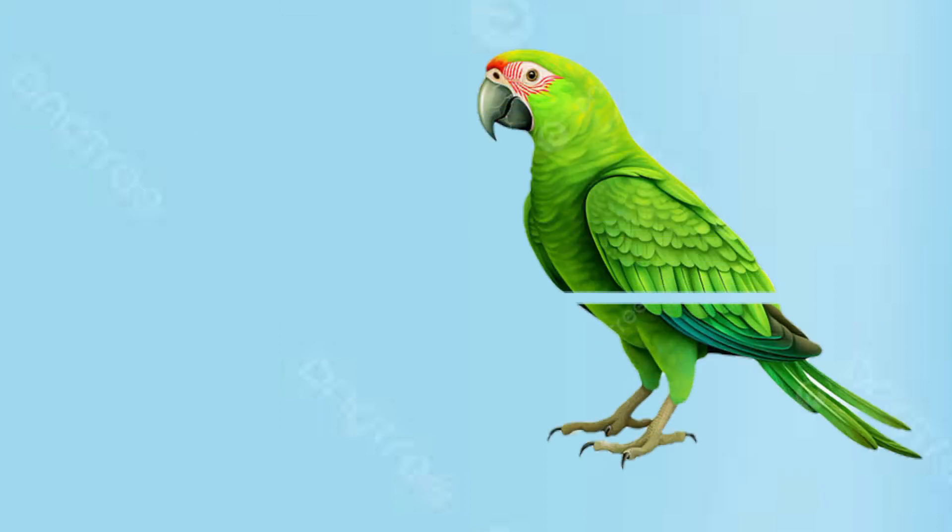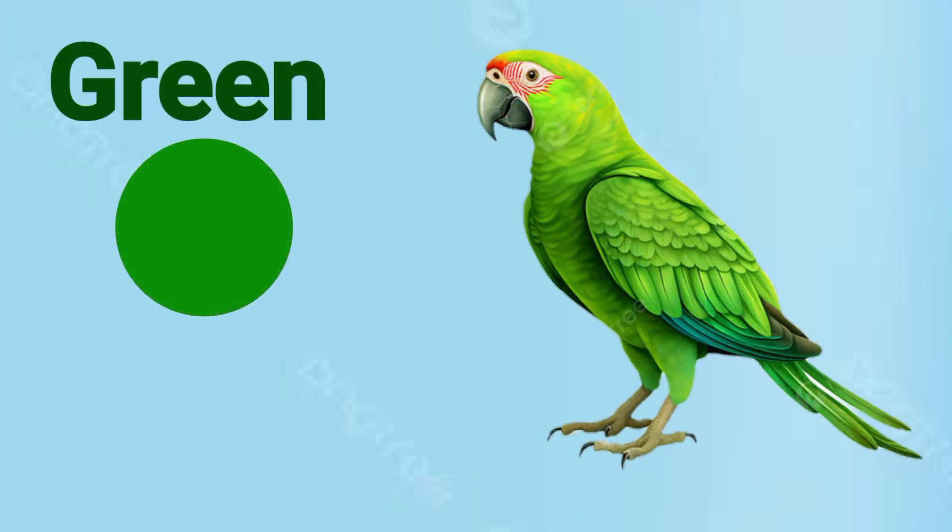What is the colour of a parrot? Green. Green means Hara.